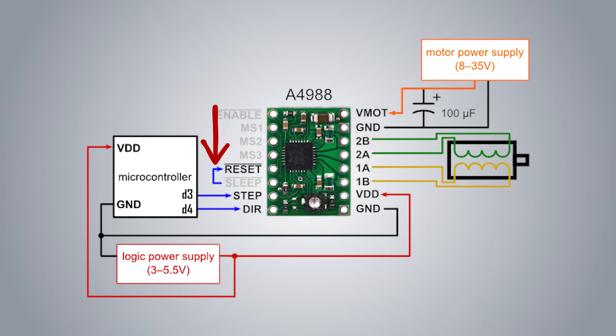Next you have to connect the reset and sleep pin to activate the driver. The A4988 uses 3.5 to 5 volts power so you can power it from the Arduino 5 volt output. Connect digital pin 4 of the Arduino to the direction pin and digital pin 3 to the step pin of the driver.